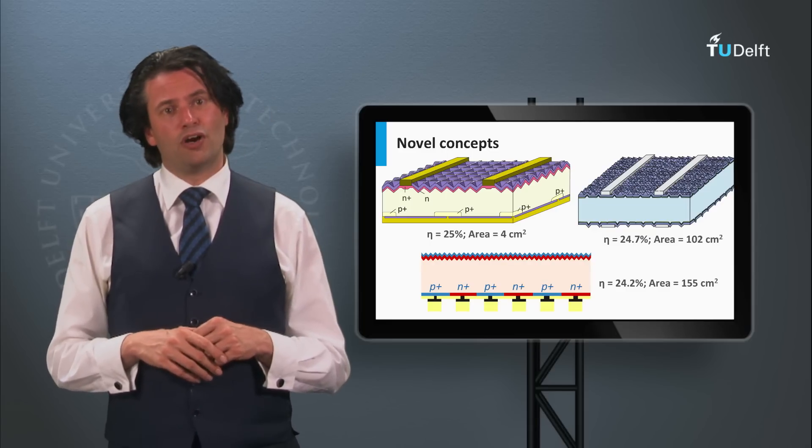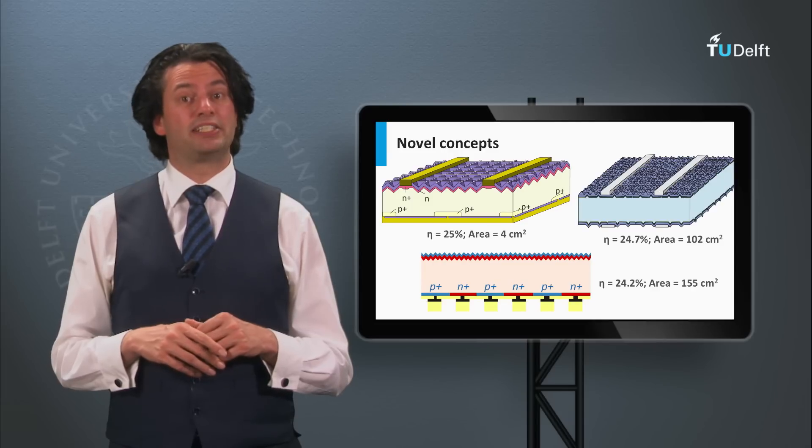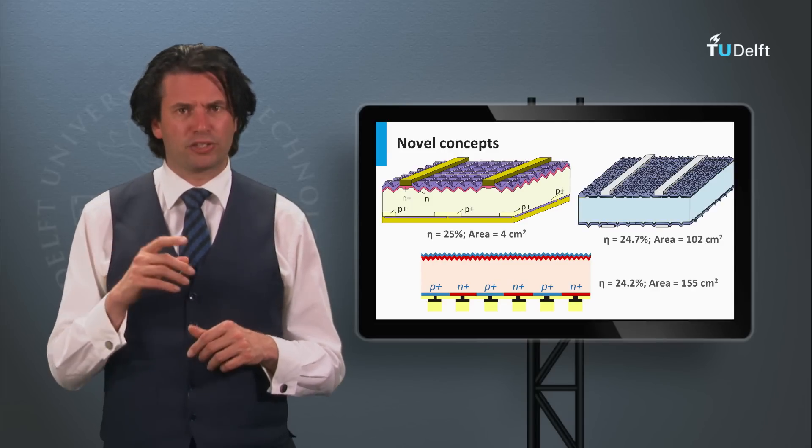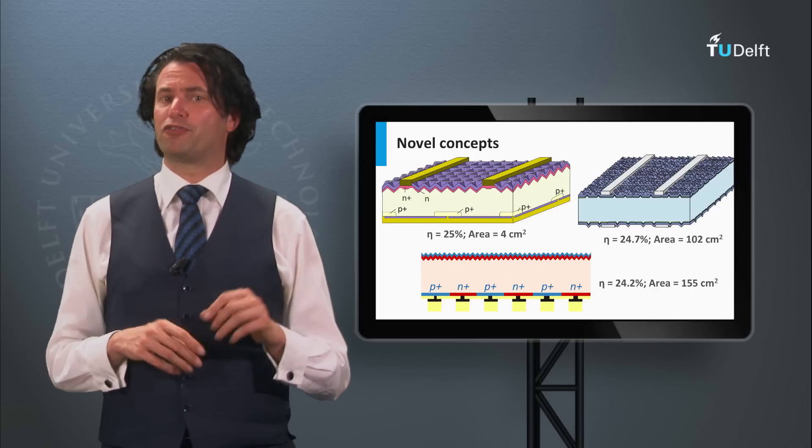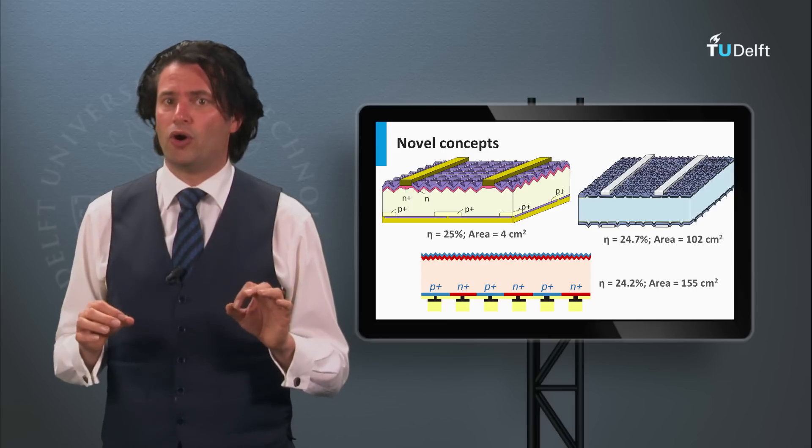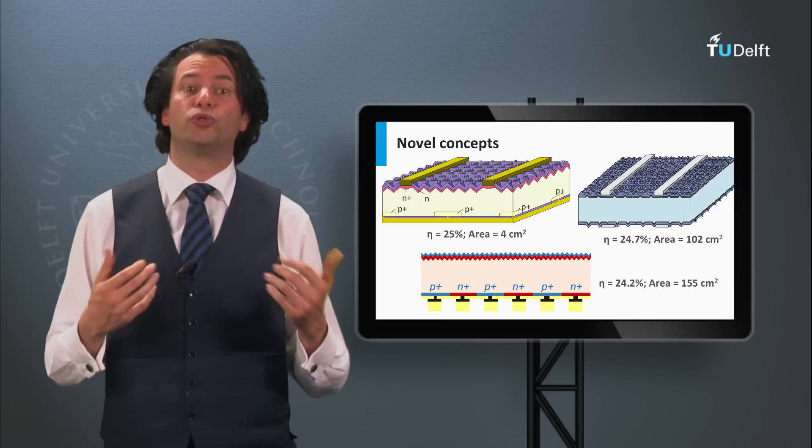Finally, for the crystalline silicon heterojunction solar cell, Panasonic achieved an efficiency of 24.7 percent on a wafer size of 102 square centimeters.